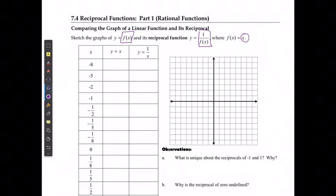So if I said that y equals x, the first part is simple enough. I'm going to state that I have negative 8, negative 5, negative 2, negative 1, negative 1 over 2, negative 1 over 5, negative 1 over 8,